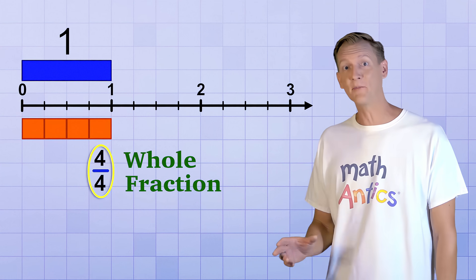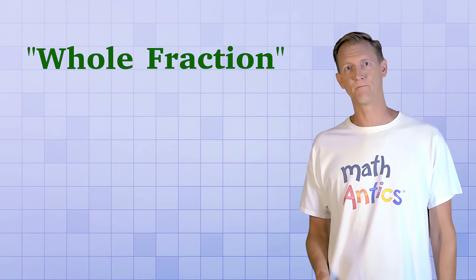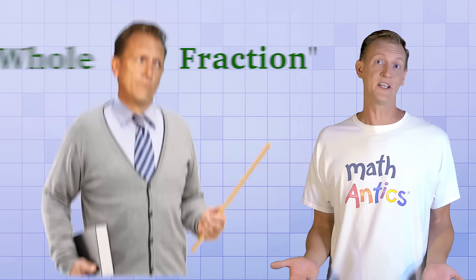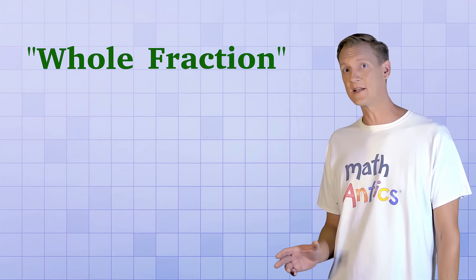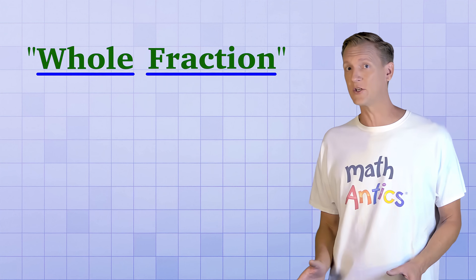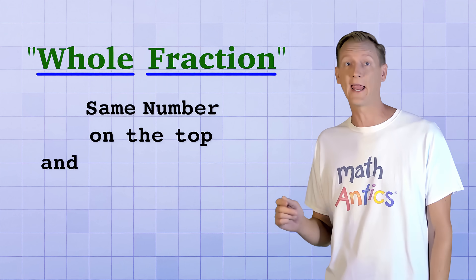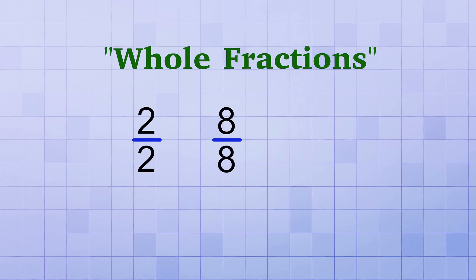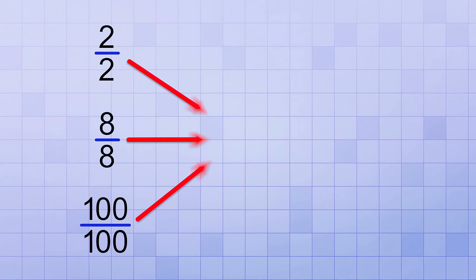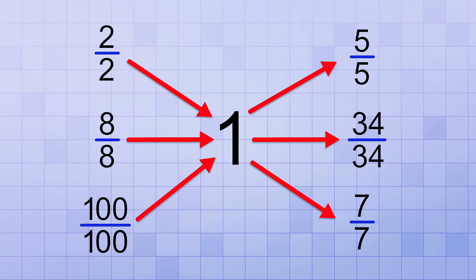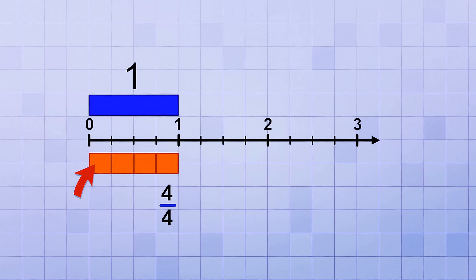4 fourths is what I like to call a whole fraction because its value equals 1 whole. It's not an official math term, but whenever I say whole fraction, I'm talking about any fraction that has the exact same number on top and bottom — 2 over 2, 8 over 8, 100 over 100. Since all whole fractions equal 1, you can replace any whole fraction with 1, and you can replace 1 with any whole fraction. On our number line, the 4 fourths combine to cover the same distance as 1, so 4 over 4 is equivalent to 1.